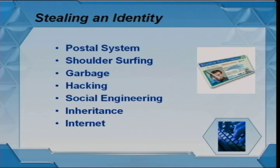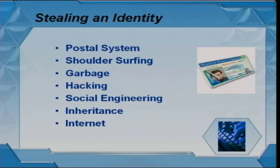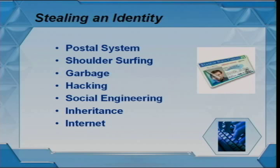Starting out, an identity thief trying to steal an identity will hopefully try to find somebody who looks somewhat like themselves — you can't really pass as a large black woman if you're a 19-year-old white male. So you pick somebody of the same gender, age, and general appearance. After you've found somebody, you can use mailbox camping — basically camping at somebody's address, collecting their mail, doing some dumpster diving. What you're trying to do is get as much information about the person as possible: banking accounts, phone bills, all kinds of stuff.